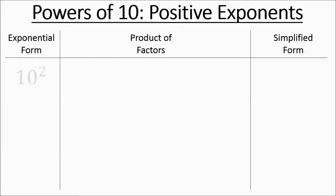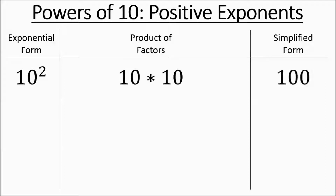So if you have something like 10 to the power of 2, if you wrote that out as a product of factors — with all the numbers involved — you'd write basically 10 times 10. You'd write down two 10s. Simplified form means work it out, and when you work it out, it's 100.